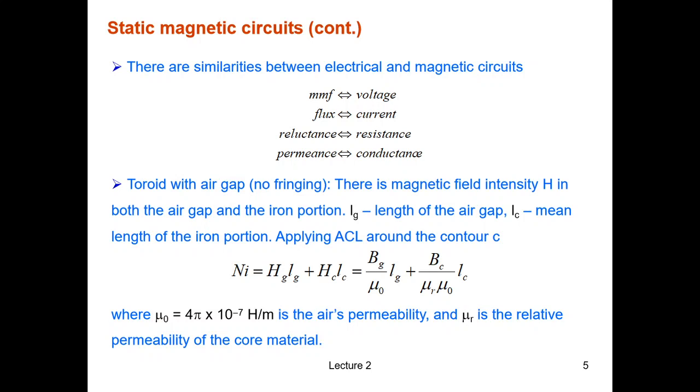In general, we have the magnetic field intensity in the air gap and in the core made of iron normally. We assume the length of the air gap is Lg, and the mean length of the core is Lc. Applying the ACL, Ampere circuit law, around the contour C, we have Ni now equals HgLg plus HcLc. And we will end up with the expression like this.